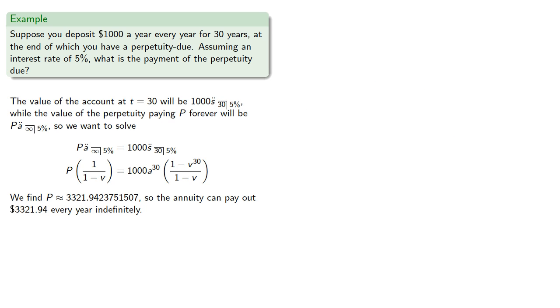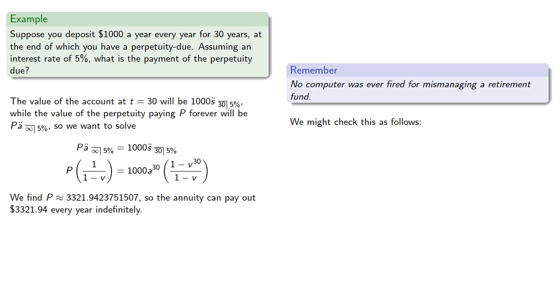Now it's worth having some method of verifying our answer. Remember, no computer was ever fired for mismanaging a retirement fund. So we might check on this as follows. The account's value at t equal to 30 is 1000 s double dot angle 30 at 5%, and we can find that to be approximately $69,760.79.